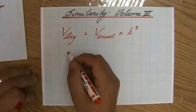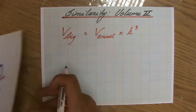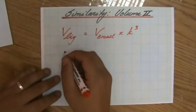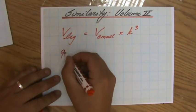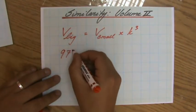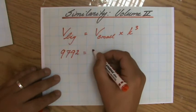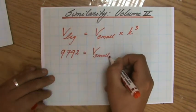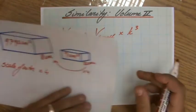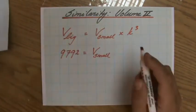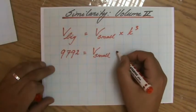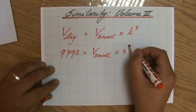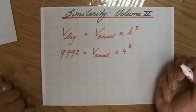Now, what is the volume of the bigger one? It's 9,792. That equals the volume of the small cuboid — which is our unknown — times the scale factor to the power 3. The scale factor was 4, so 4 to the power 3.